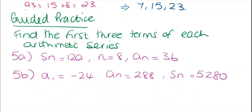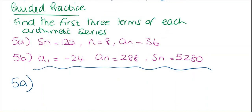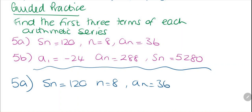Now for guided practice — we have two questions: find the first three terms of each arithmetic series. Let's look at 5a. We're given the sum is 120, n is 8, and an is 36. We don't know a1.